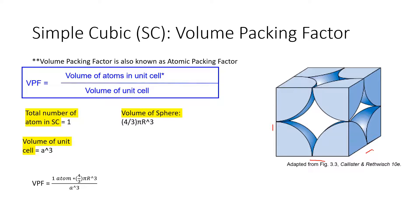To simplify, we substitute a = 2r, giving us (2r)³ in the denominator. Doing the algebra and simplifying, we get π/6, or approximately 0.52, which means the atoms make up about 52% of the total volume of the unit cell.